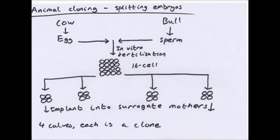Now we'll look at animal cloning, mainly because it's more interesting. There are two types: splitting embryos, also known as artificial identical twins, and nuclear transfer using enucleated eggs.